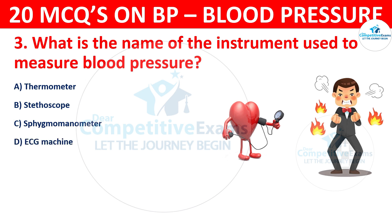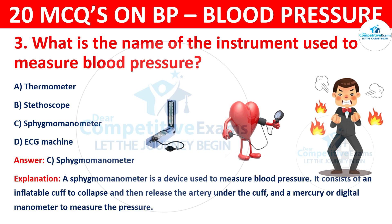The correct answer is Sphygmomanometer. A sphygmomanometer is a device used to measure blood pressure. It consists of an inflatable cuff to collapse and then release the artery under the cuff, and a mercury or digital manometer to measure the pressure.